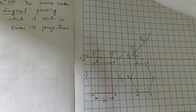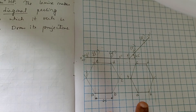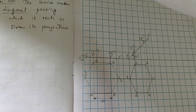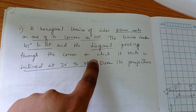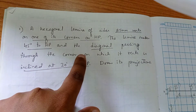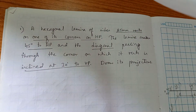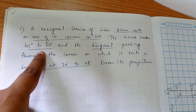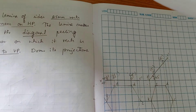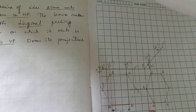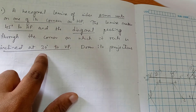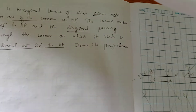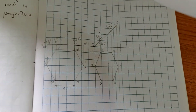We will solve the hexagonal problem using the bit angle method. The first two positions are already drawn. The question states: a hexagonal lamina of dimension 25 rests on one of its corners on HP. The lamina makes 45 degrees to HP — that is the second position. The diagonal passing through the corner is inclined at 30 degrees to VP.